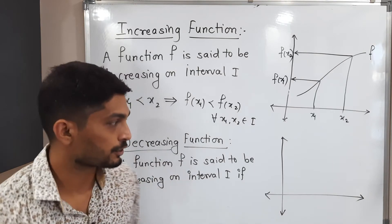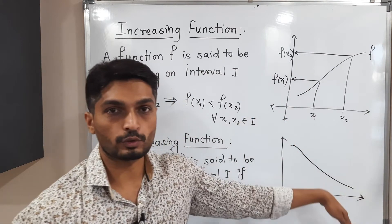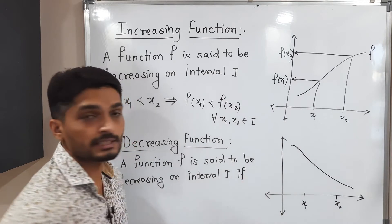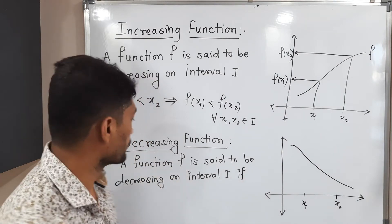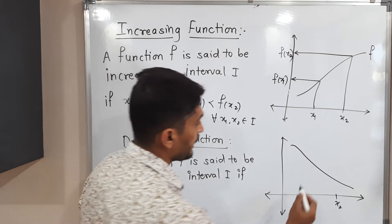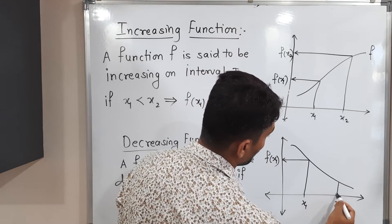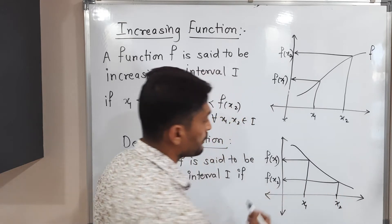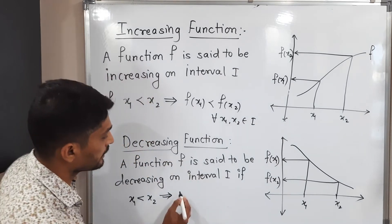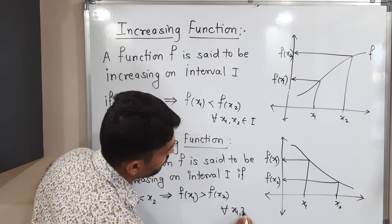Now let us see what happens in the case of a decreasing function. The graph of a decreasing function will be like this — the function is decreasing so the graph is also decreasing. Taking the same two points x1 and x2, where x1 < x2 since x1 lies on the left-hand side of x2: the image of x1 is f(x1) and the image of x2 is f(x2). Here we get exactly the opposite — x1 < x2 but f(x1) > f(x2) for all x1, x2 belonging to I.